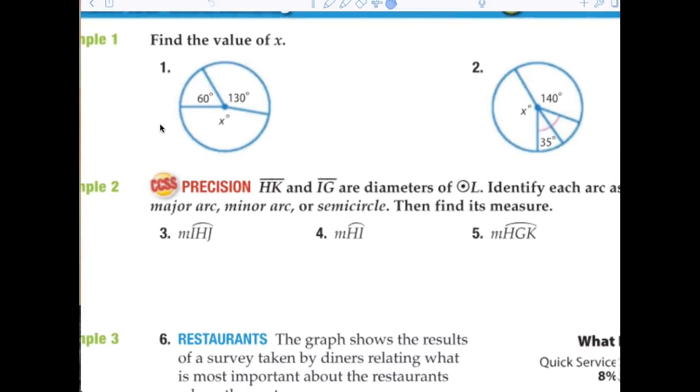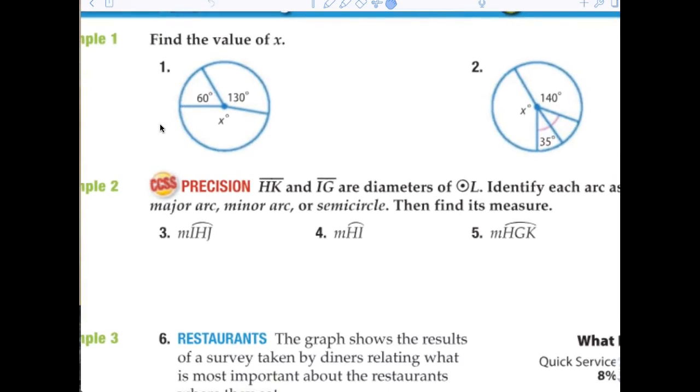So question number one. Remember, the degrees of a circle, if you make one revolution, there are 360 degrees in a circle. So now all we're doing is we're breaking down the circle into its parts, and we're finding the missing degree measure.